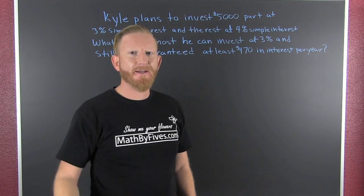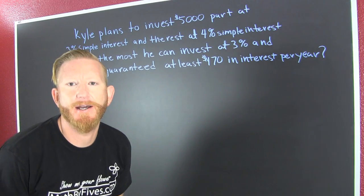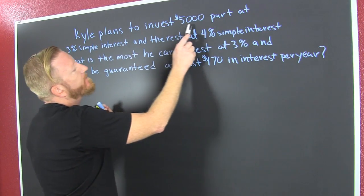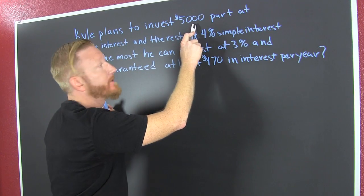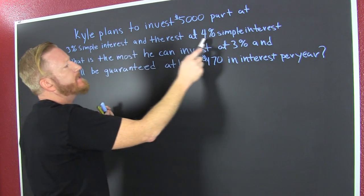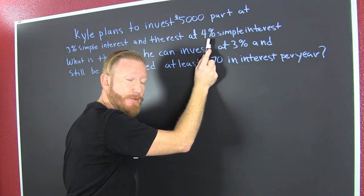Interesting problem. We're talking about interest and we want to know about Kyle. What does Kyle want to do? Kyle plans to invest $5,000, part at 3% simple interest and the rest at 4% simple interest.